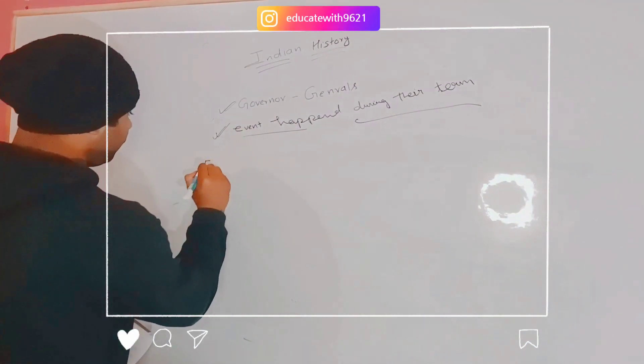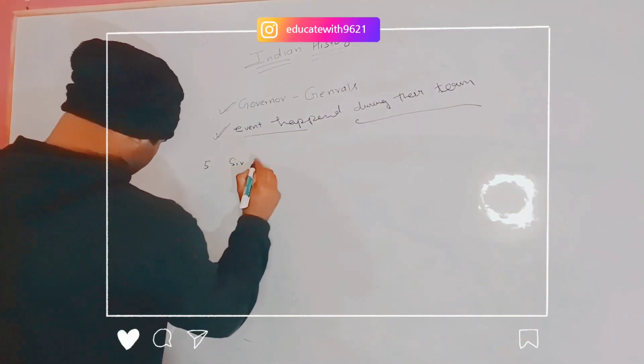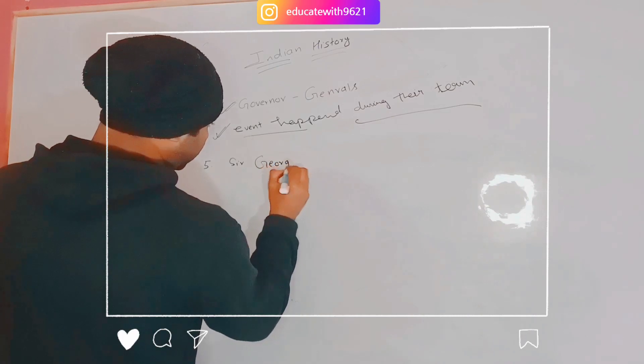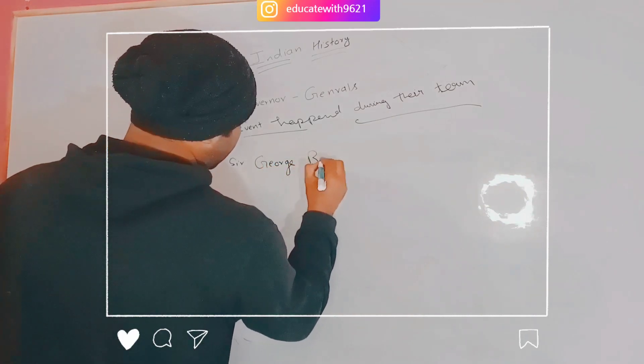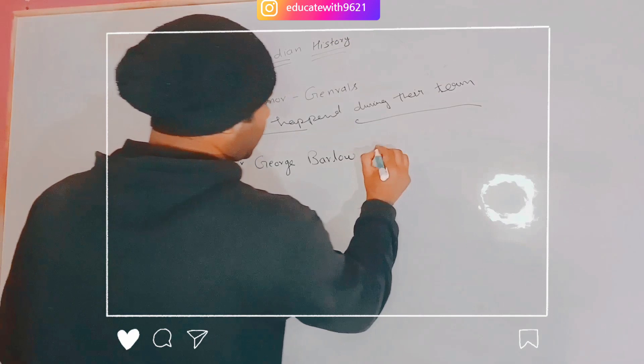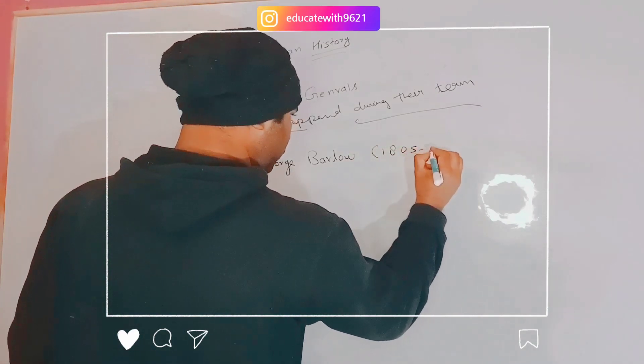Now we will learn about the fifth one, Sir George Barlow. His time period is 1805 to 1807.